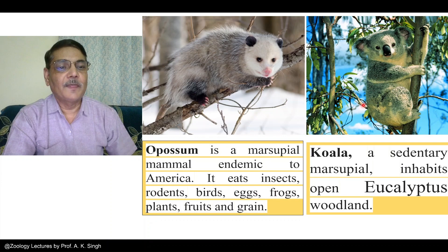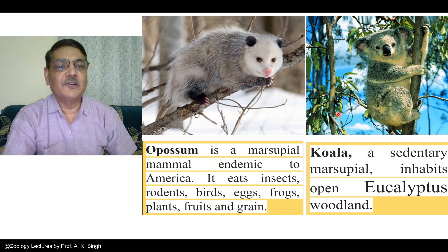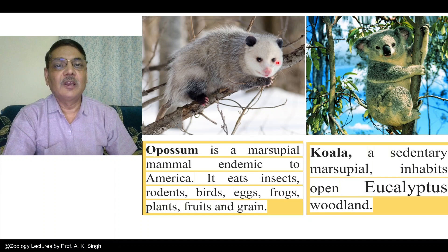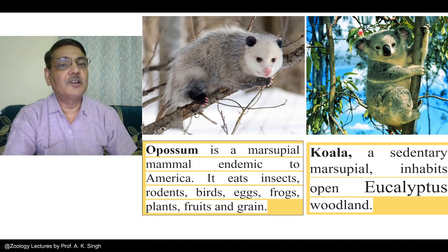The other one on the right side is koala. It is a sedentary marsupial mammal which inhabits open eucalyptus woodland. These two animals both belong to class Mammalia and both are marsupials — their females possess a marsupial pouch in which they keep newborn babies for rearing — but their ecological conditions vary. The left one has wide ecological distribution, whereas the koala is confined to eucalyptus woodland and feeds only on eucalyptus leaves, surviving on a single kind of plant.